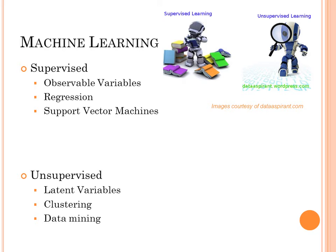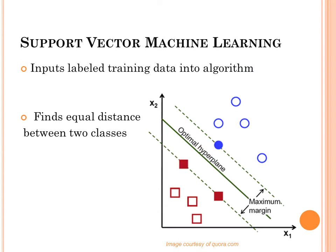A good example of unsupervised learning is data mining. Support vector machine learning involves the input of training data or data sets into an algorithm, and it finds the equal distance between, in this instance, two classes. The only points that matter during support vector machine learning are the ones closest to the optimal hyperplane. Support vector machines can go beyond a two-dimensional aspect — they can relate data sets in three and four-dimensional space.